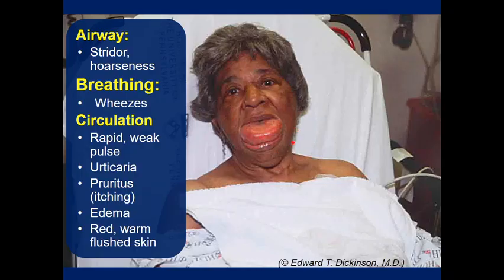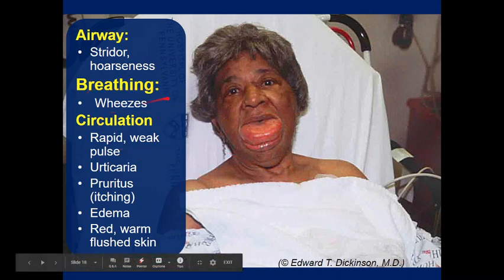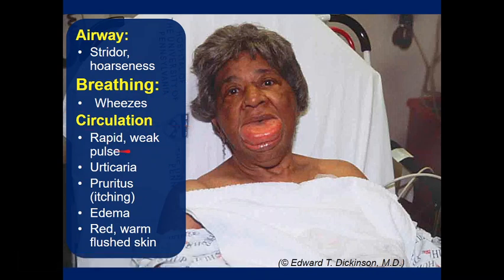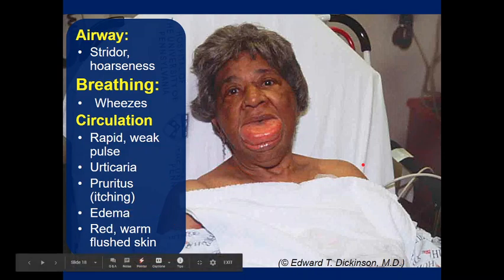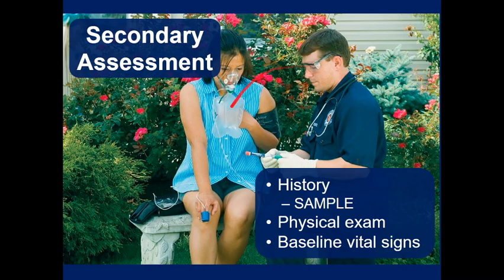Primary assessment as with everyone. That's angioedema — a big swollen tongue — and you can see how that could be an airway emergency requiring a cricothyrotomy. For airway, you might hear stridor from upper airway angioedema, or hoarseness. They may have bronchoconstriction; histamine in the airways causes wheezing, similar to asthma. Circulation: rapid, weak pulse from hypotension. Skin: urticaria (hives), pruritus (itching), edema, and warm, red, flushed skin from distributive shock.